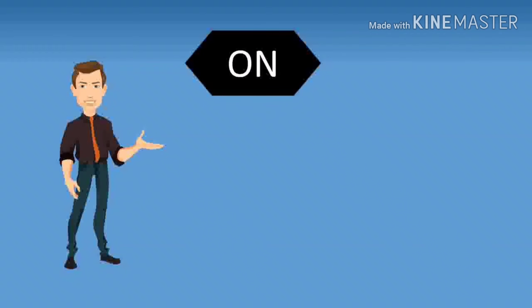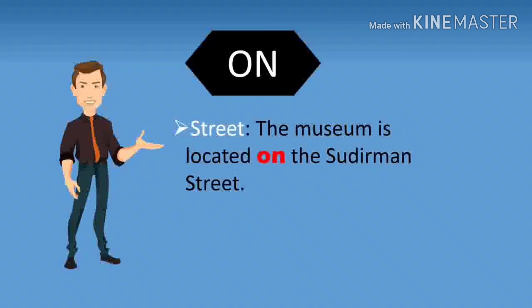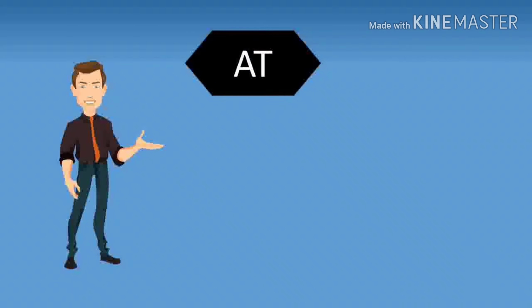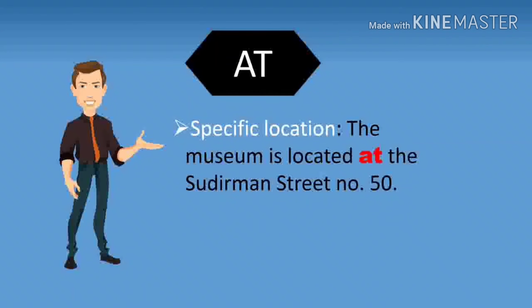Let's discuss the three prepositions in, on, and at concerning place first. Berkaitan dengan waktu dulu. The first preposition is in. In here is used for name of country. For example, he studied in London. Or name of city or town or village. For example, for city, he lives in London.